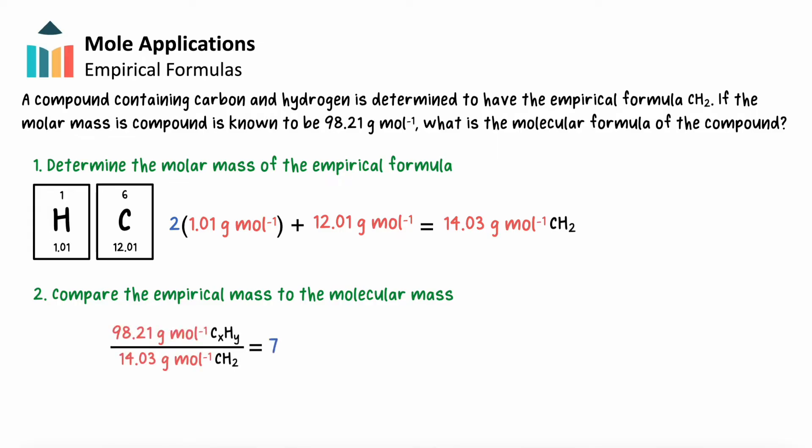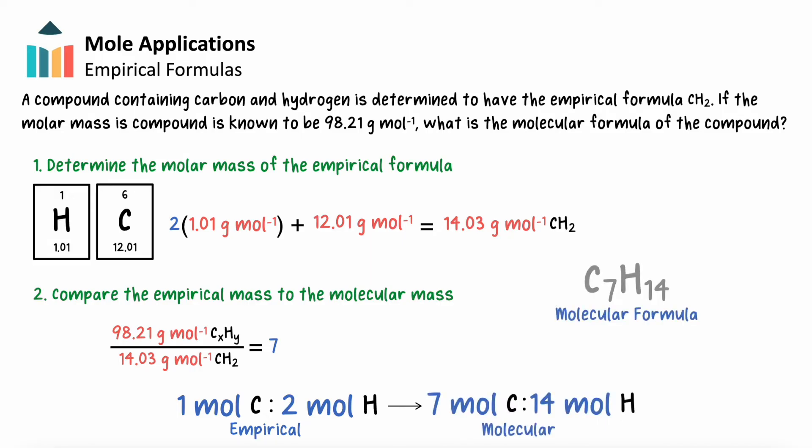This means the mole ratio, and therefore each subscript in the molecular formula must be 7 times that of the empirical formula. This gives a molecular formula of C7H14.